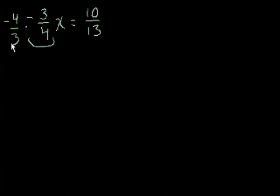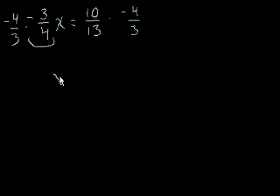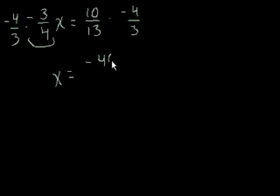So if we multiply the left hand side by negative 4 thirds, we also have to do the same thing to the right hand side. Minus 4 thirds. The left hand side, the minus 4 thirds and the 3 fourths, they cancel out. You could work it out on your own to see that they do. They equal 1. So we're just left with x is equal to 10 times minus 4 is minus 40. 13 times 3, well, that's equal to 39. So we get x is equal to minus 40 over 39.